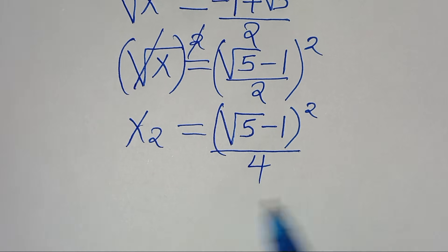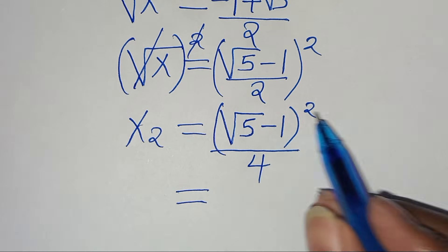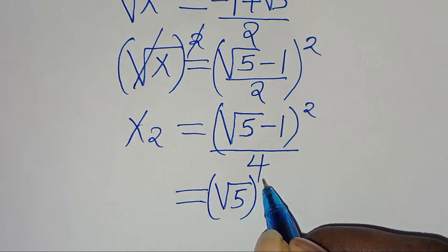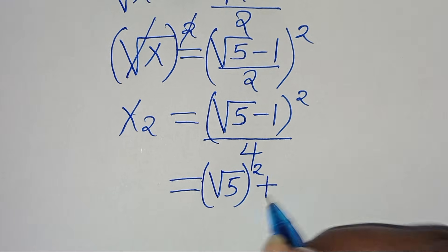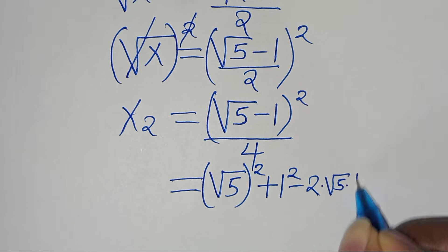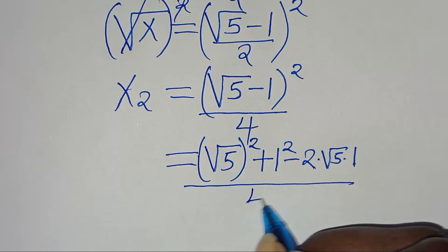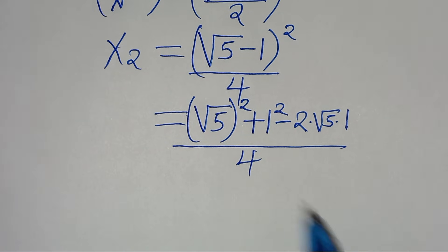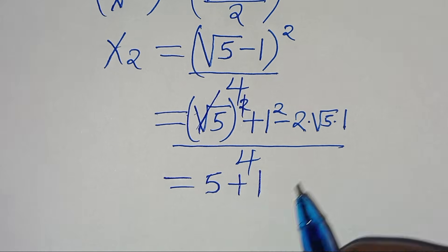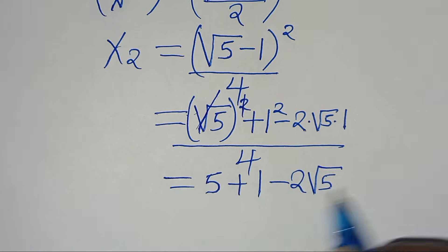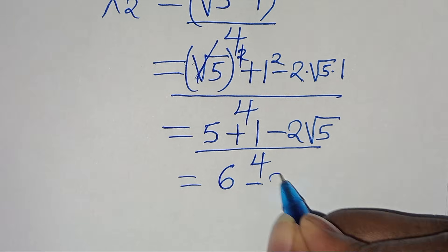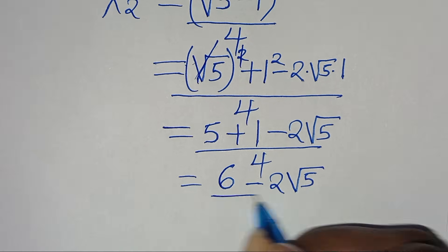Expanding the numerator: (√5 minus 1) squared equals (√5)² plus 1² minus 2 times √5 times 1, all divided by 4. So (√5)² eliminates the square root to give 5, plus 1, minus 2√5, divided by 4. So 5 plus 1 is 6, minus 2√5, divided by 4.